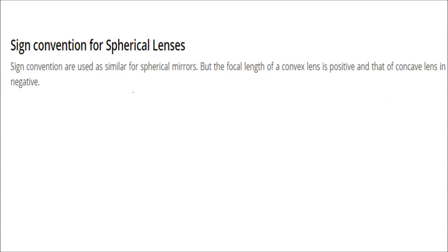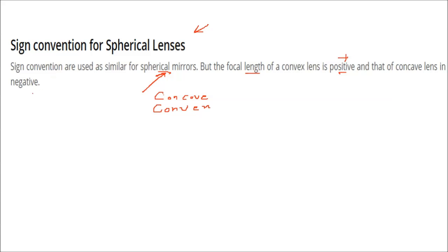Sign convention for spherical lenses. The sign convention for spherical lenses is almost similar to spherical mirrors. The difference is that the focal length of a convex lens is taken as positive, and the focal length of a concave lens is taken as negative.